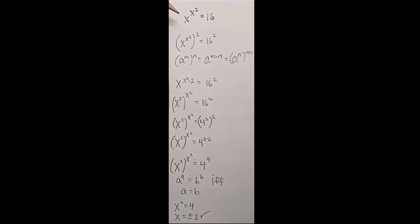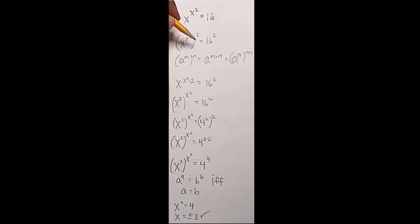Can you solve it? Here's my solution. So we have x to the x squared equals 16. I'm going to square both sides.